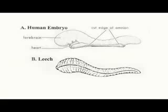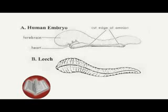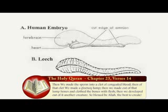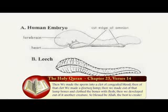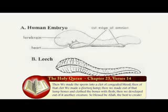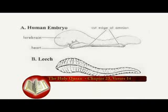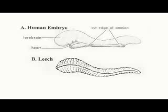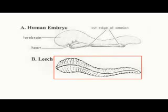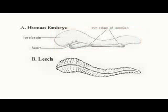Alica — Surah Al-Mu'minun, ayah 14: 'Then we created the drop into a leech-like structure, then of that leech-like structure we made a chewed-like substance.' Alica refers to a leech-like appearance especially at about 22 days, as shown in this slide. This is a leech and this is the human embryo at about 23 days — the similarity between these structures is amazing.